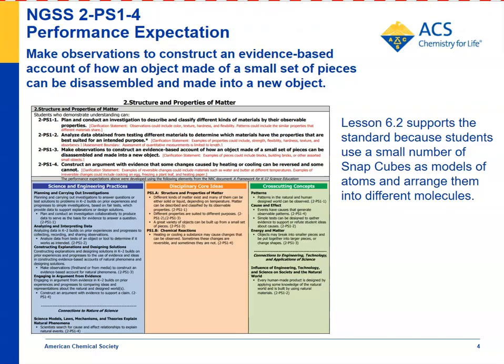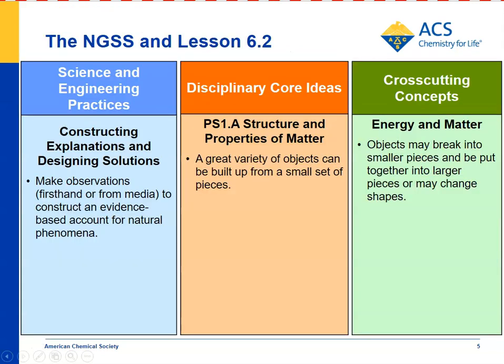For the NGSS Standard 2-PS1-4: make observations to construct an evidence-based account of how an object made of a small set of pieces can be disassembled and made into a new object. In Lesson 6.2, we do that in the context of atoms and molecules. Students use small pieces — snap cubes — as models of atoms to create different objects, molecules. The science and engineering practice is to make observations to construct an evidence-based account for natural phenomena — in this case, that atoms join together to make molecules, and that different atoms can be arranged in different ways to make the different molecules of different substances.